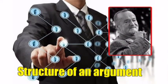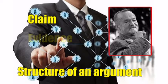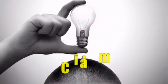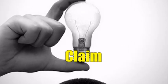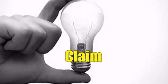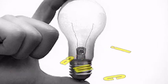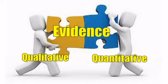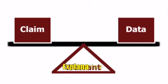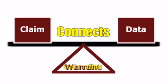Tolman explains how every argument structure must consist of three main components: a claim, evidence, and an explanation. The claim answers what are you trying to get me to think or believe, and it is the statement which proposes a solution to a problem. The evidence answers what have you got to prove it, through qualitative and quantitative evidence like reports and statistics. The explanation answers how does this lead to the claim — it connects the evidence and the claim together and provides an answer to how they are related.